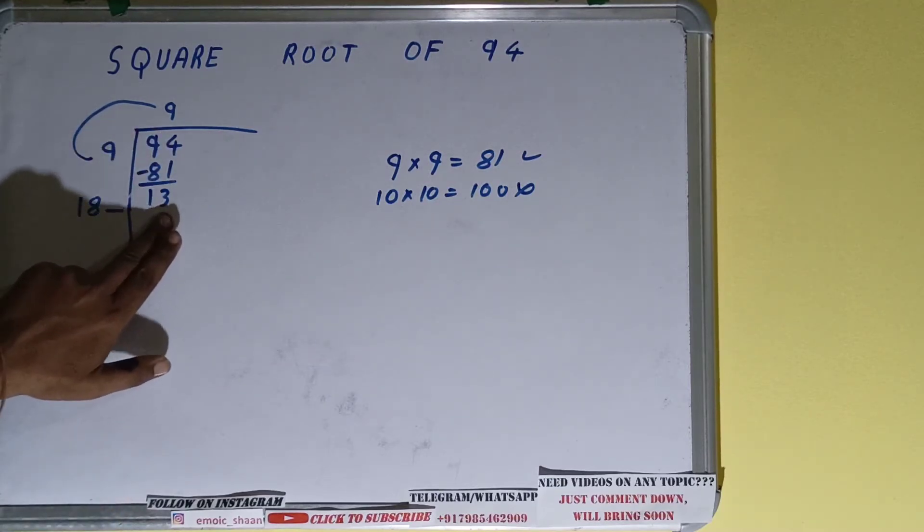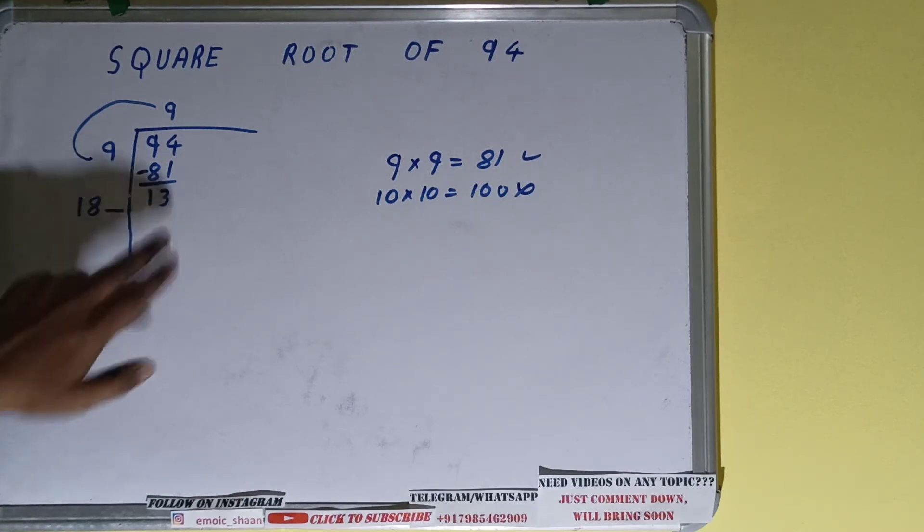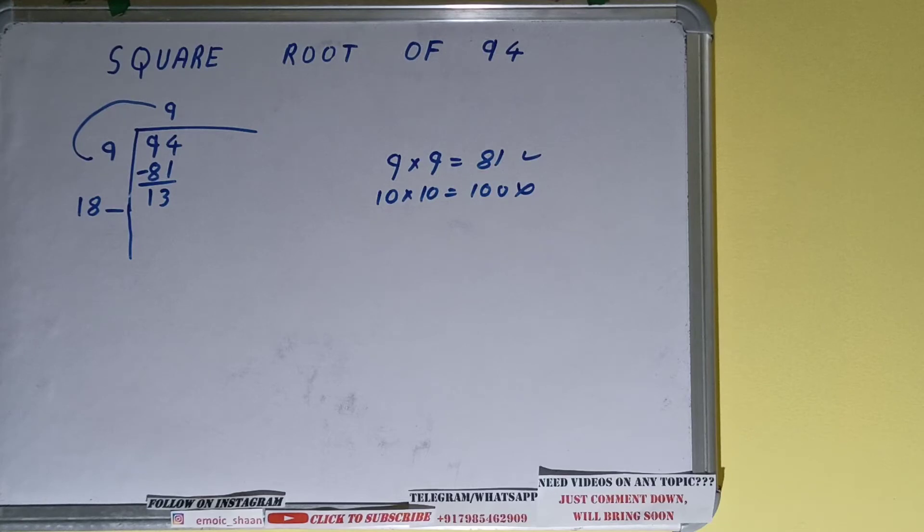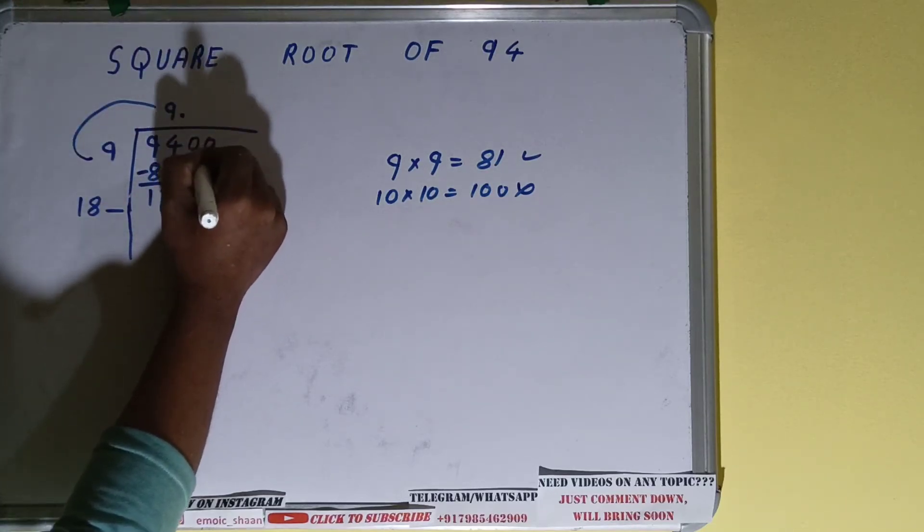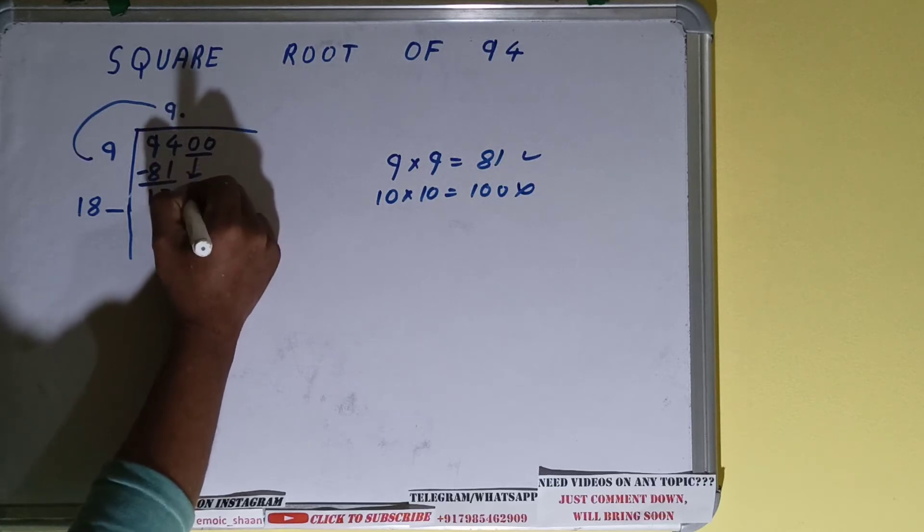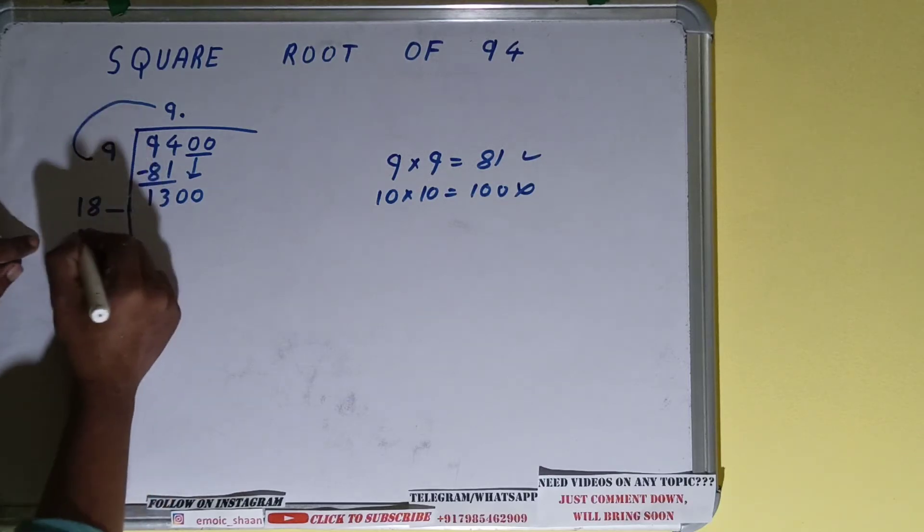You can see this number 13 is now smaller than this three-digit number. So to increase the value of this number 13 so that we can divide it, we need to put decimal. Once we put decimal we can bring pairs of zeros down. Remember we always bring zeros in pairs and not single zeros.